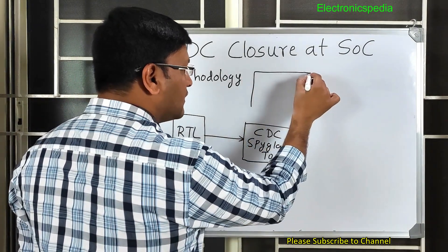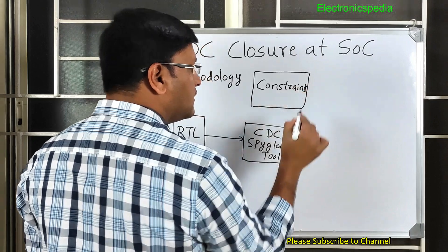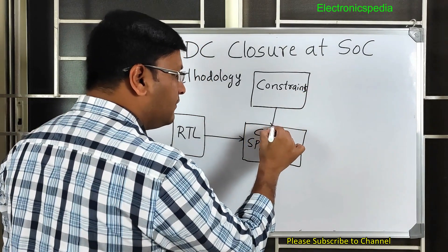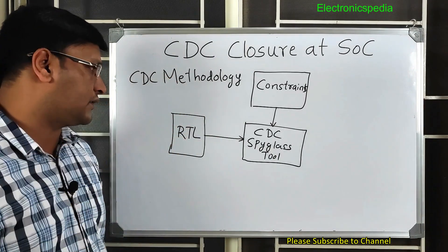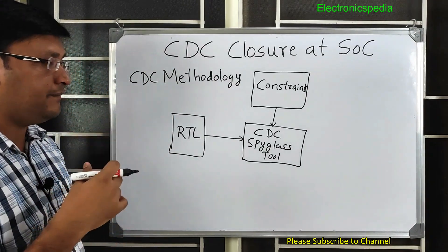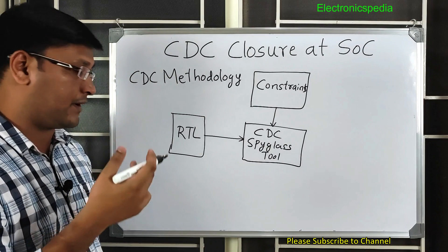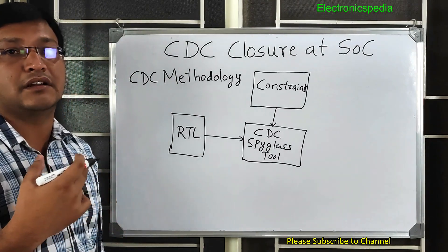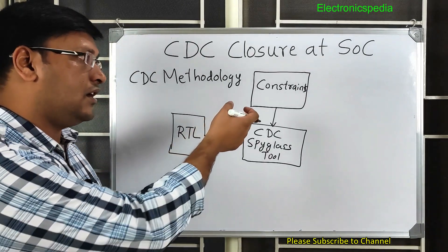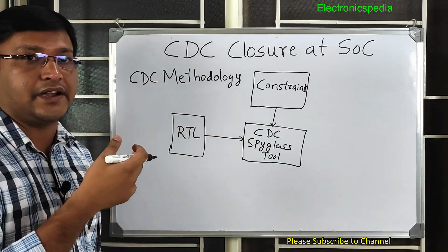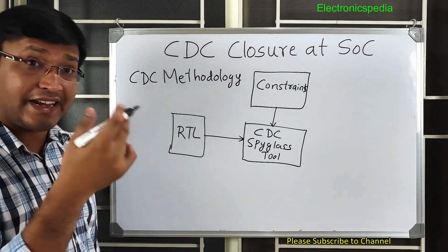The second input to the SpyGlass CDC tool is the constraints. Assume you have an IP with a top-level wrapper — you need to constrain the IO ports of that wrapper. This includes specifying what the resets are, what the clocks are, and what the input ports are. We generally don't write constraints for output ports, but we do write them for all input ports.